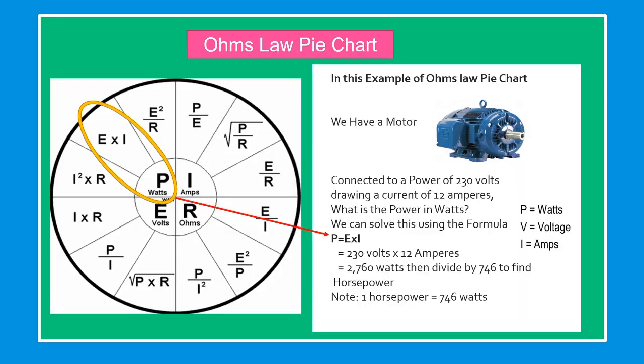Ohm's Law pie chart. In this example of Ohm's Law pie chart, we have a motor connected to a power of 230 volts, drawing a current of 12 amperes. What is the power in watts? We can solve this using the formula.